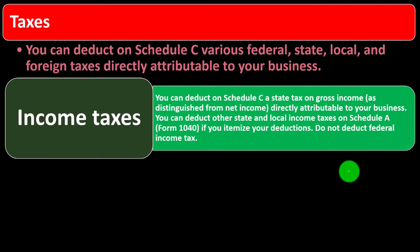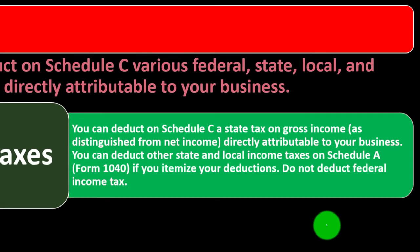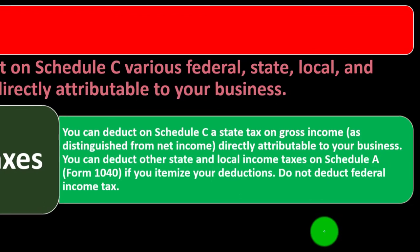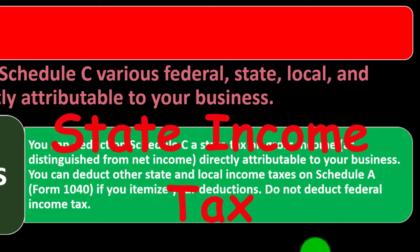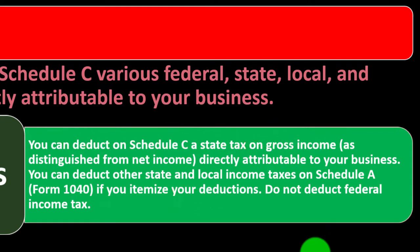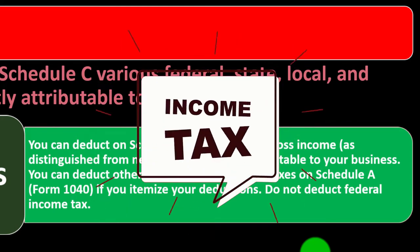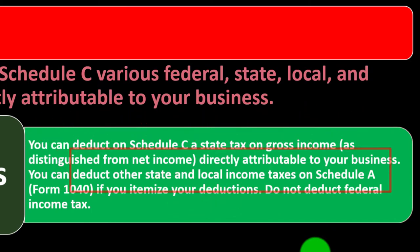Regarding income taxes: you can deduct on Schedule C a state tax on gross income — as distinguished from net income — directly attributable to your business. This is a specific type of state income tax, sometimes called a gross receipts tax. Other state and local income taxes may be deducted on Schedule A of form 1040 if you itemize. Do not deduct federal income tax.